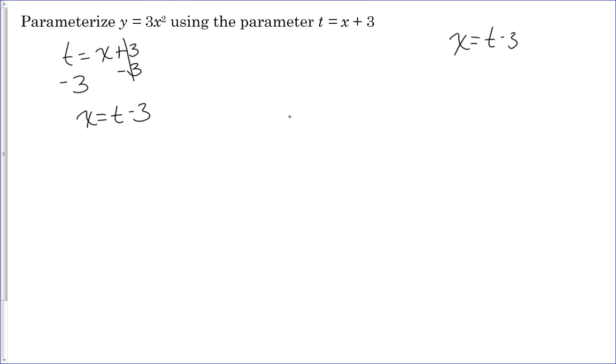So now the second step is to plug the t minus 3 into the original formula. So we're going to have y equals 3 parentheses t minus 3 squared. Don't forget that when you plug it in for x, since x is squared, the entire thing that you're plugging in for x will also be squared.